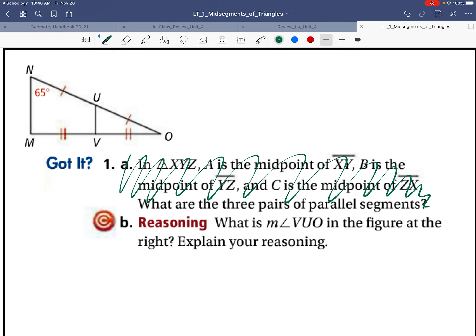But B goes with our diagram. What is the measure of angle VUO, which is this angle right here, in the figure? How are we going to find the measure?